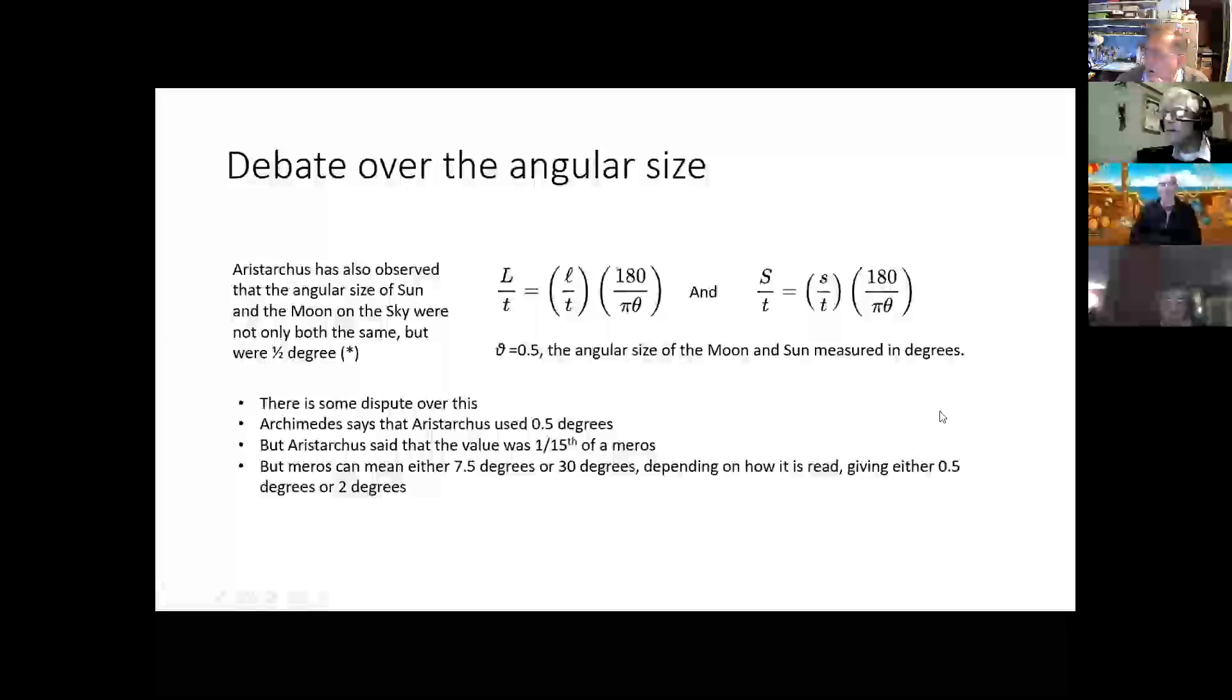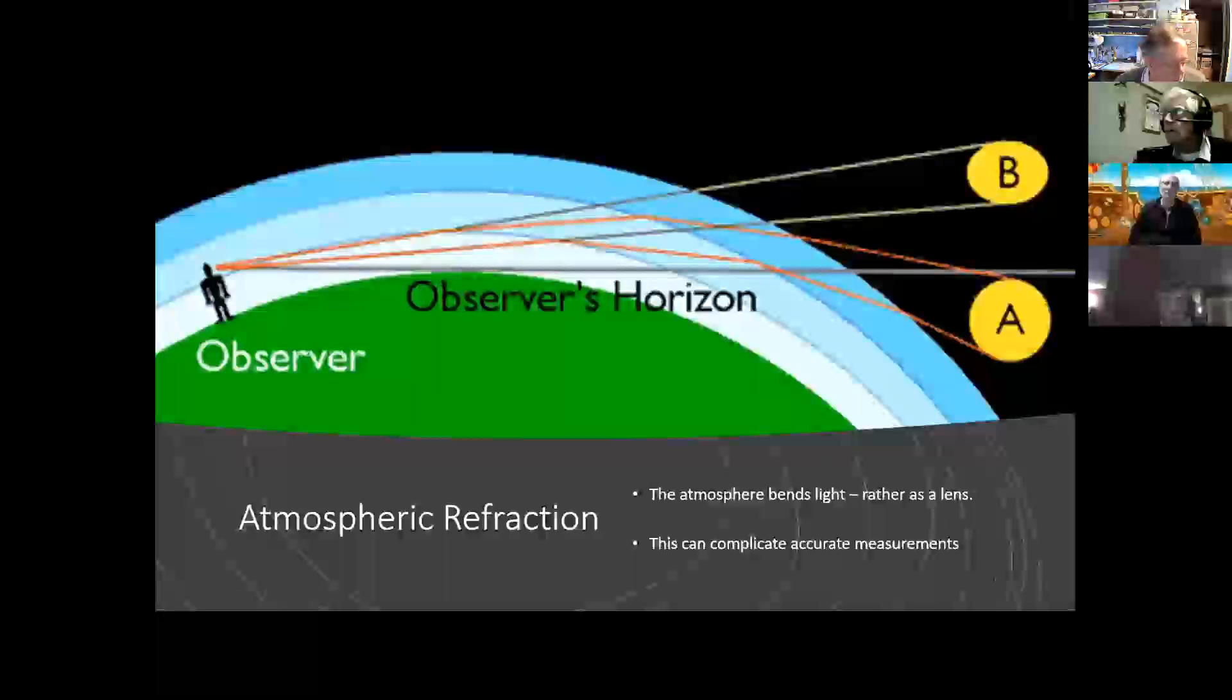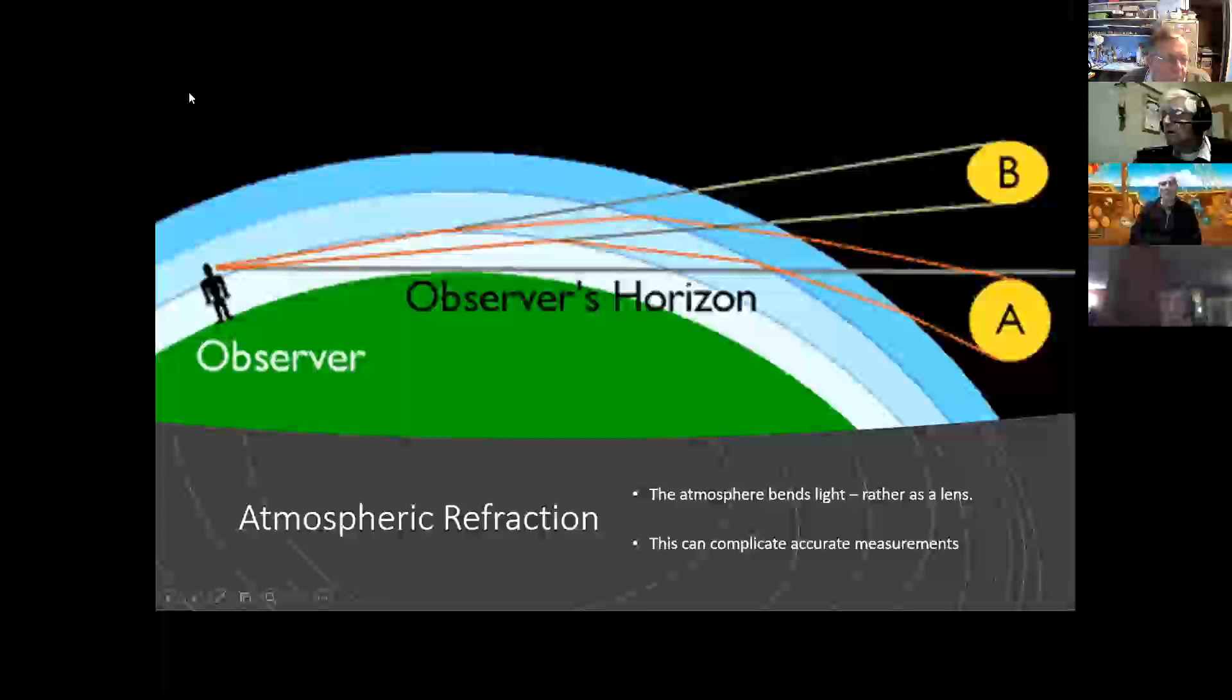So why did he get it wrong? Well, the main reason that he got it wrong was because when trying to make that original observation of looking to see where the Sun was compared to the Moon, he was looking through the Earth's atmosphere, and the Sun is always a bit lower down at sunset than you expect, than you observe, because the Earth's atmosphere acts like a lens. We see this in astronomy. We see the light being split into the red and blue components slightly differently, because the red and blue light are bent by a different amount. But it does change the position.